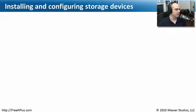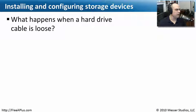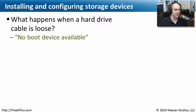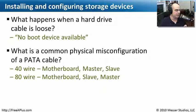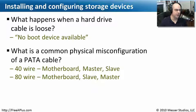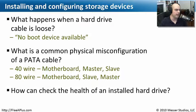Let's review what we covered. First question: what happens when a hard drive cable comes loose? If the system can't see the drive, it certainly can't boot from it, and you may get a BIOS message saying there's no boot device available. Second question: what is a common physical misconfiguration of a PATA cable? On a 40-wire PATA cable, the first port is the master and the second is the slave. On an 80-wire cable, the first port is actually the slave and the end of the cable is the master connection. Make sure you're plugging the master drive into the correct port depending on which cable type you're using.